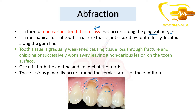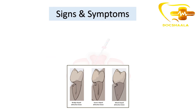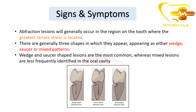Tooth tissue is gradually weakened, causing tissue loss through fracture and chipping, or is successively worn away, leaving a non-carious lesion on the tooth surface. This occurs in both dentin and enamel, and these lesions generally occur around the cervical areas of the dentition.